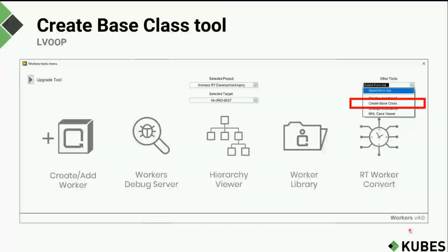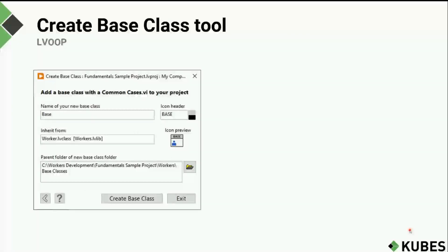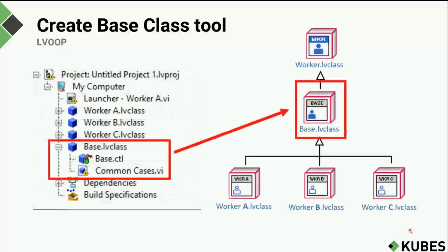The Create Base Class Tool allows you to create worker base classes. You have the option to select a name for your base class, type in an icon header, and select the class you want to inherit your base class from. The tool creates a base class — for example, 'base.lvclass' — added to the project, containing common cases. In the worker inheritance hierarchy, the base class inherits from the ultimate base class of all workers: worker.lvclass. Now we have a base class to which we can add common functionality.